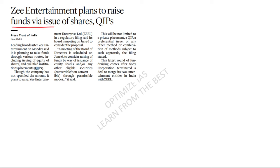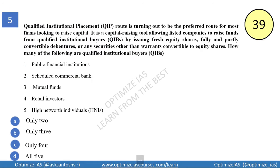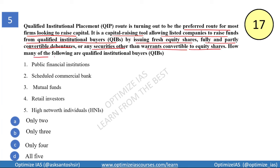The fifth question is on qualified institutional placement, or QIP. With capital markets performing well, companies are raising capital, and QIP is one preferred route. A qualified institutional placement is a capital raising tool allowing listed companies to raise funds from qualified institutional buyers by issuing fresh equity shares, fully or partly convertible debentures, or any securities other than warrants convertible to equity shares.